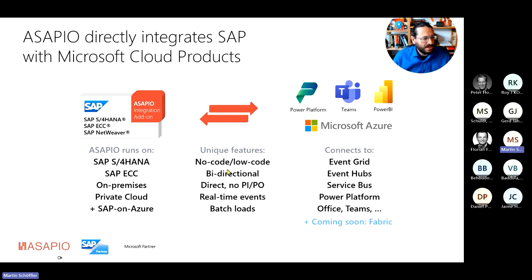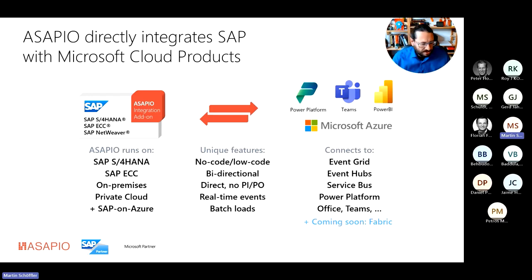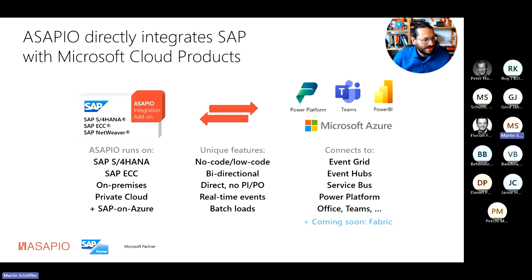So what does our tool now offer? We have a long-existing integration add-on that's been on the market for almost 10 years. It has evolved into a powerful extraction framework that comes with configuration-only data extraction — that's where the no-code/low-code comes in — where you can keep the 'keep your core clean' SAP mantra true. You configure what data you want and how it should look in the message payload, and then connect it to a trigger inside the ABAP application layer.